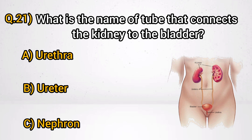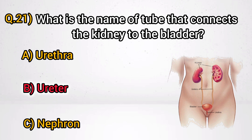Question 21: What is the name of the tube that connects the kidney to the bladder? Answer B: Ureter.